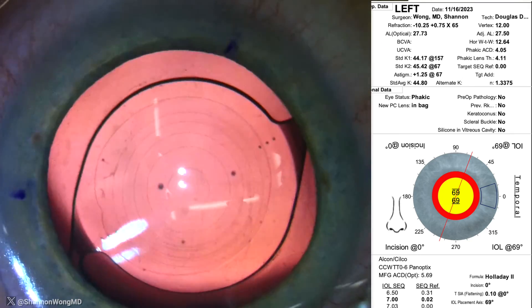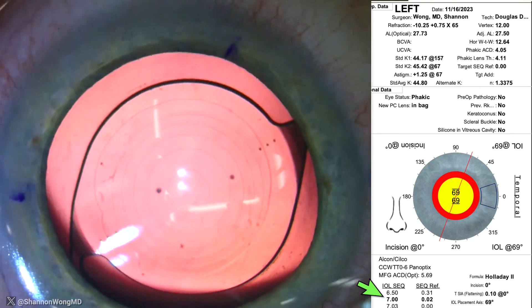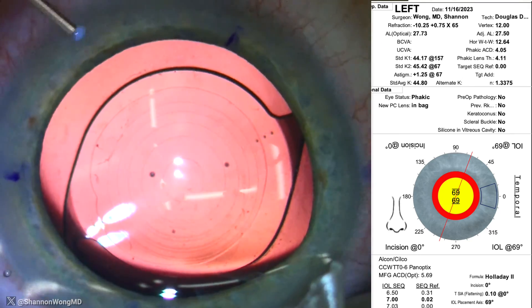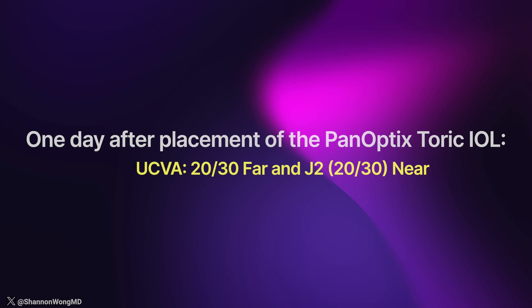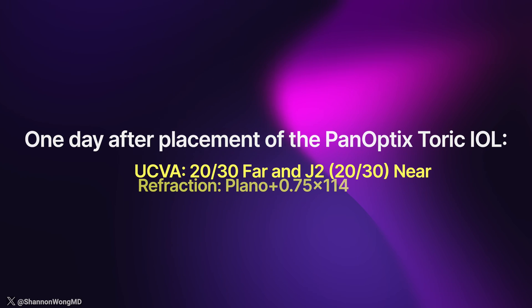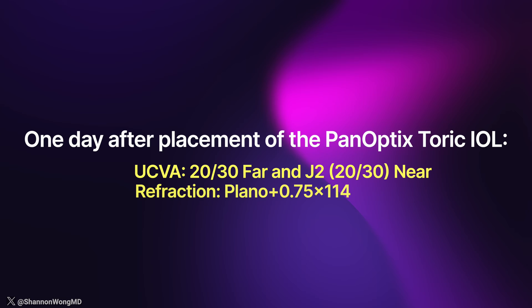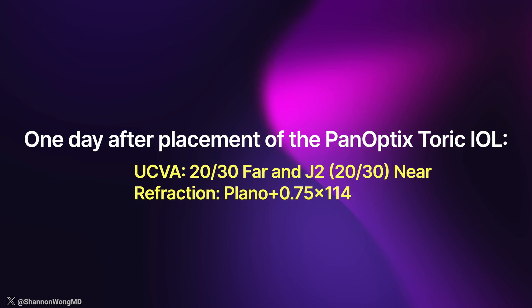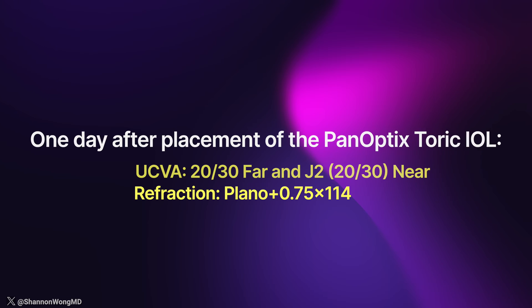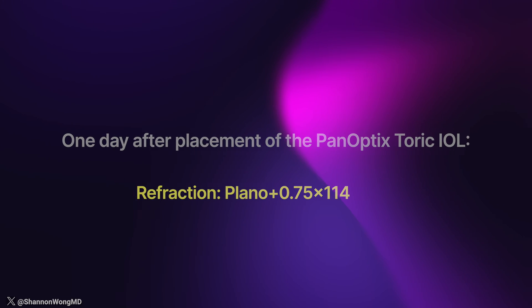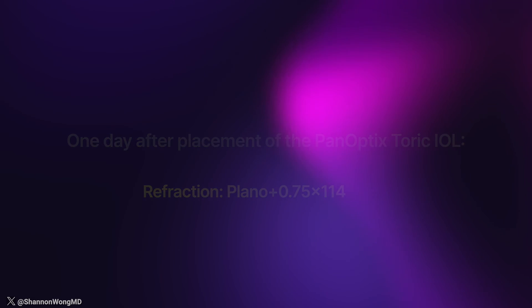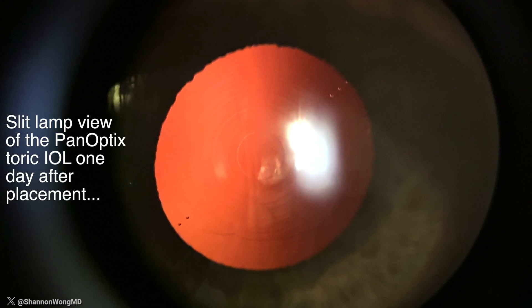We placed a 7-diopter Panoptix Toric lens into his left eye on November 20, 2023. His surgery was routine and uneventful. One day after surgery, his uncorrected vision was 20/30 far away and J2 or 20/30 near, with a residual refraction on post-op day one of plano plus 0.75 at axis 114.